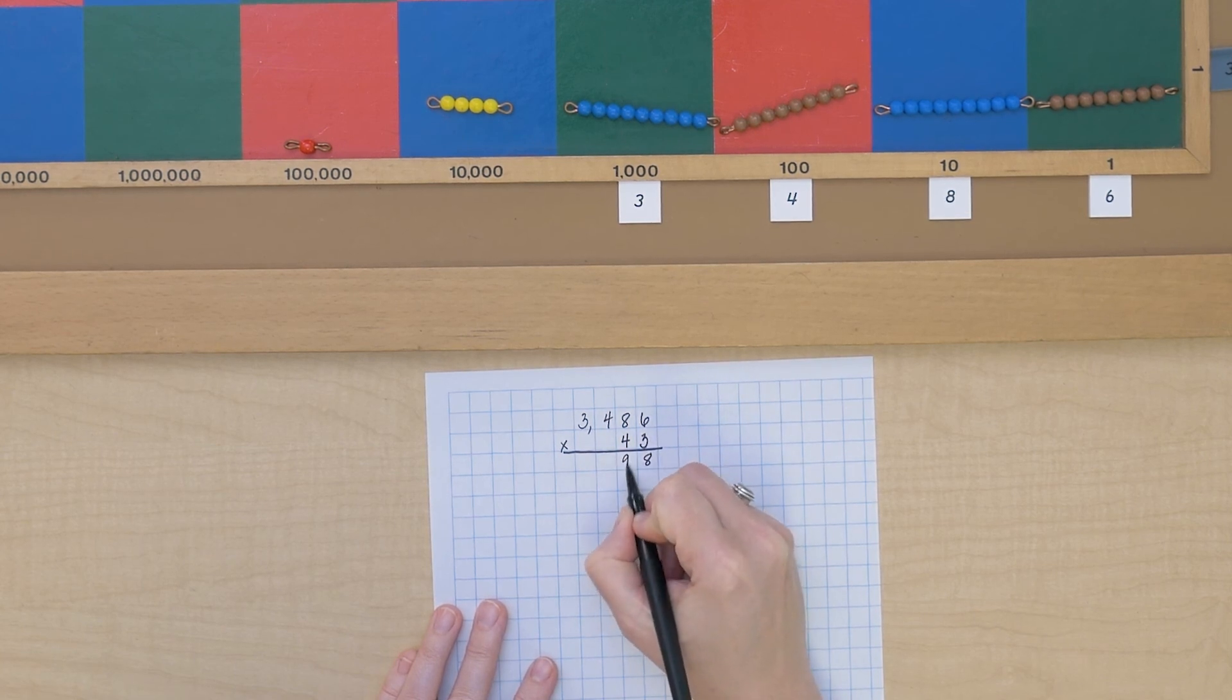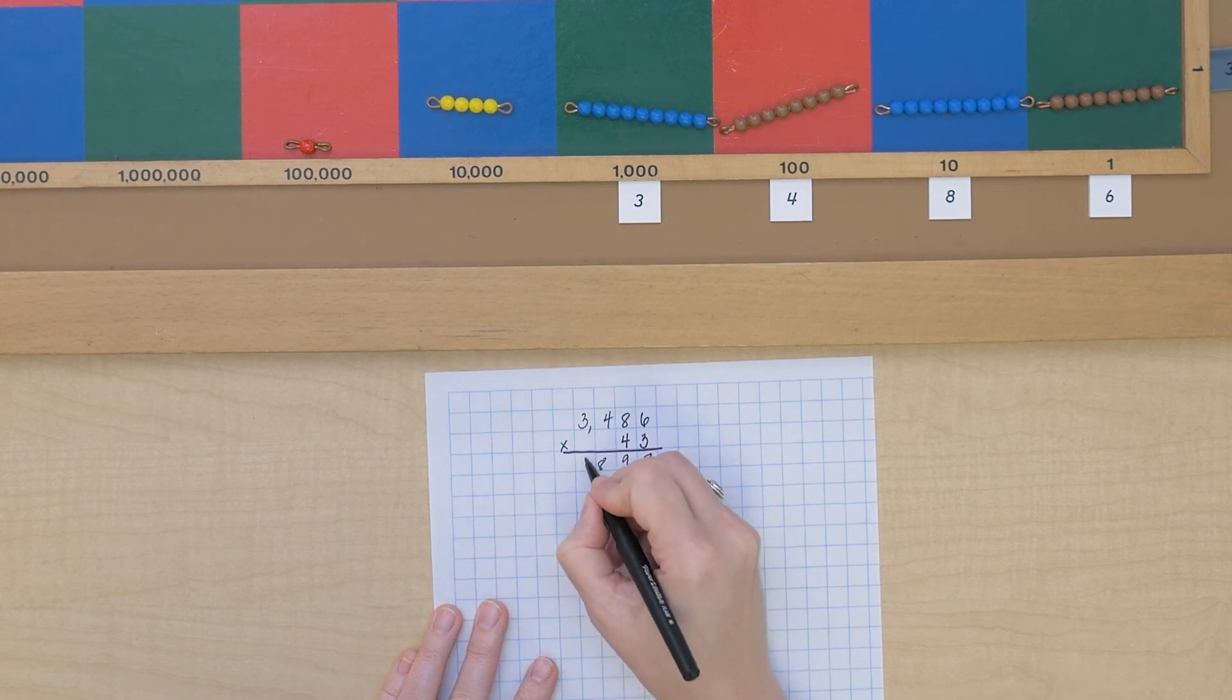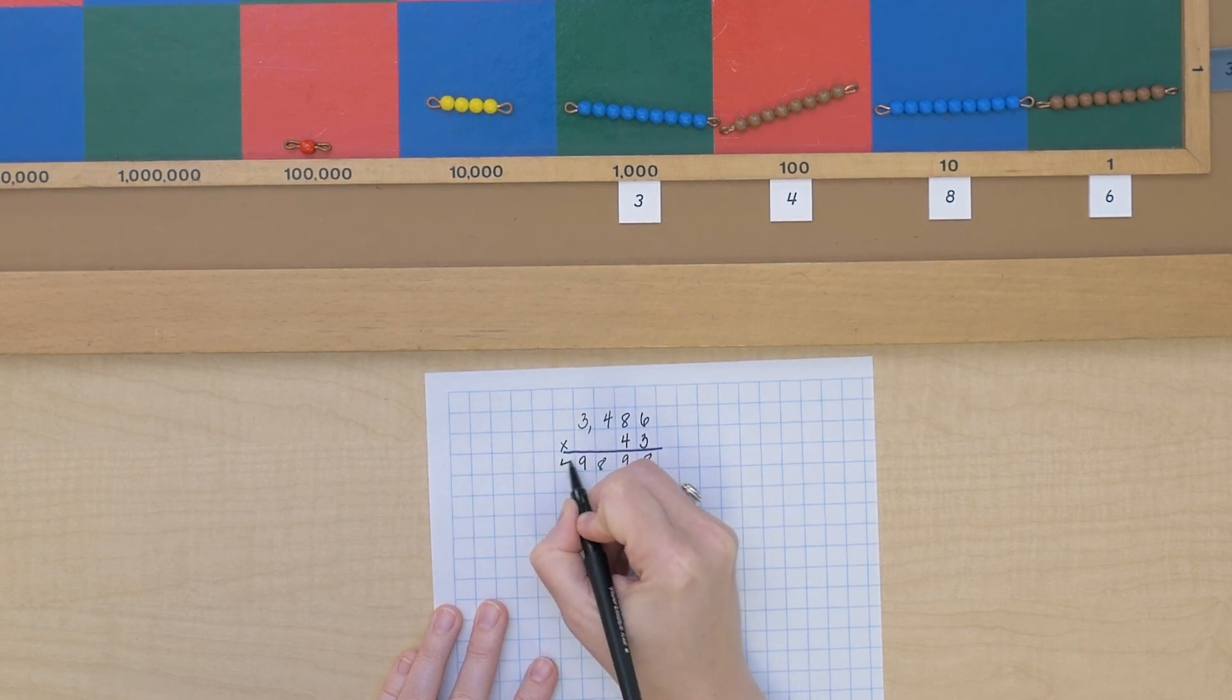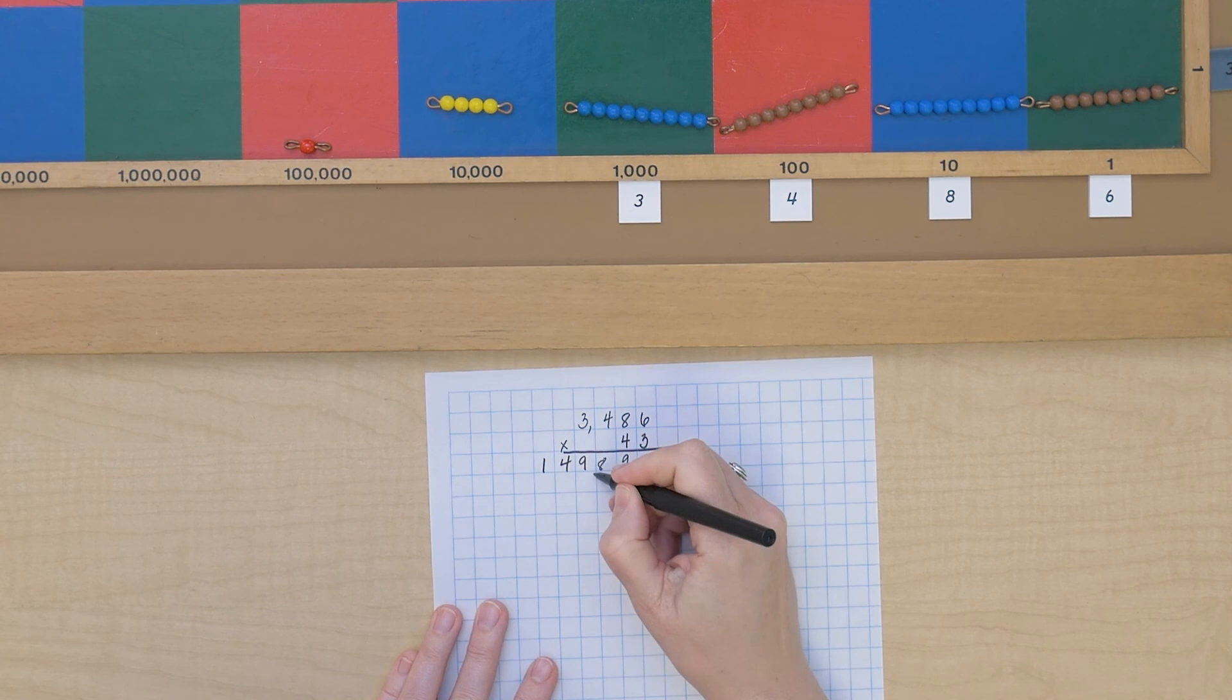8 units, 9 tens, 8 hundreds, 9 thousands, 4 ten-thousands, and 1 hundred-thousand.